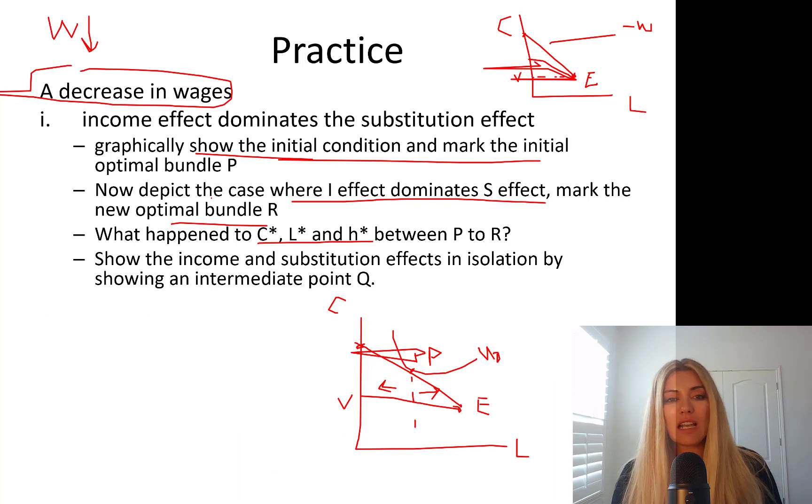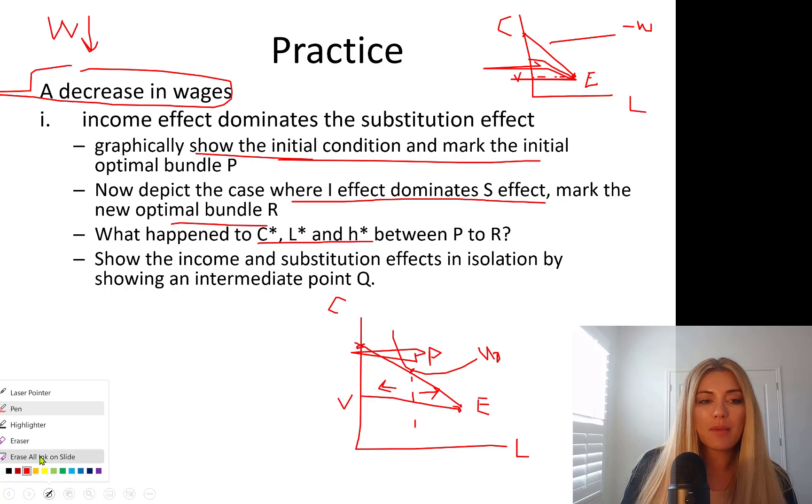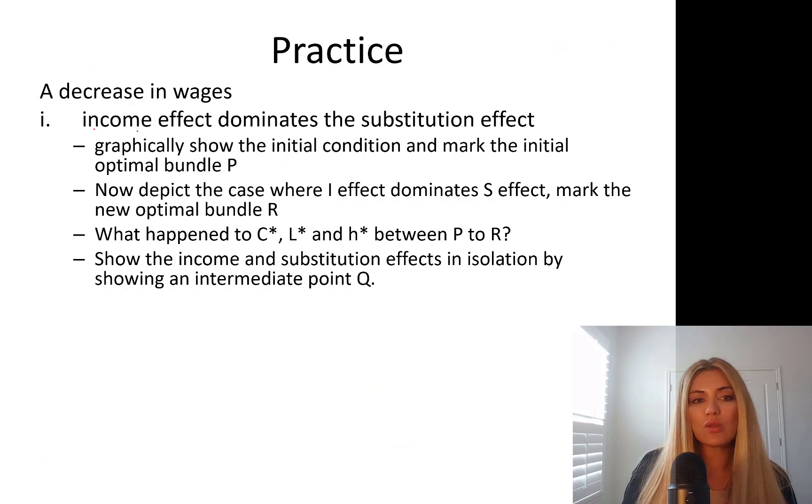And so your answer, what happened to consumption, leisure hours between P to R? Show the income and substitution effects in isolation by showing the intermediate point. So the first case, I'm asking you to assume income effect dominates the substitution effect.